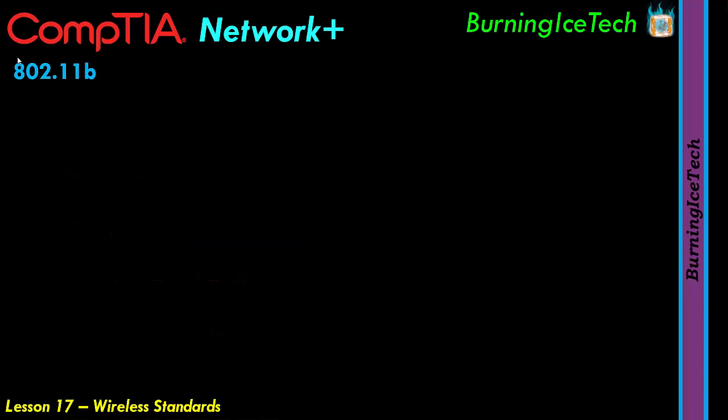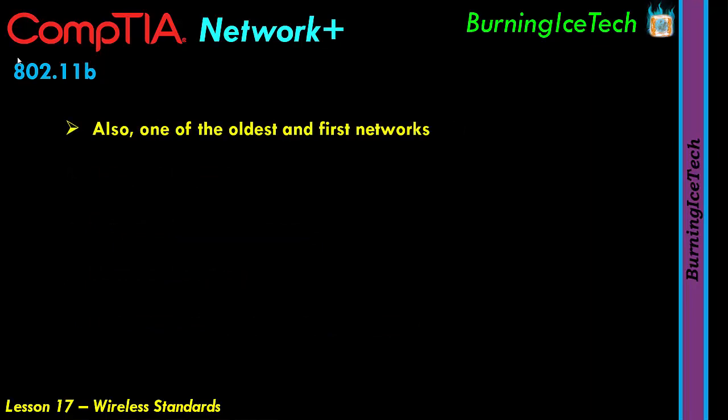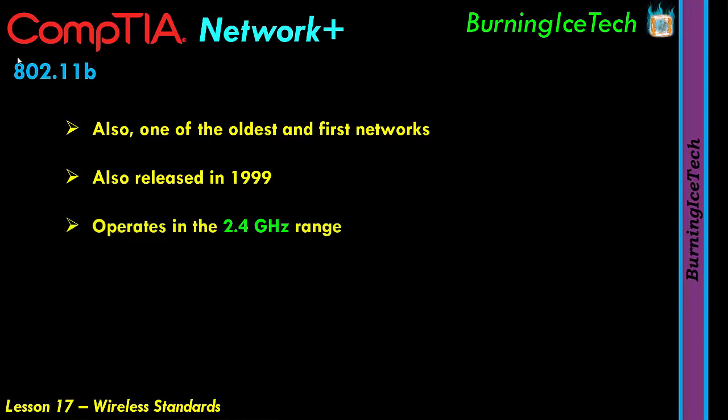Next up, we've got the 802.11b standard. This is also one of the oldest and one of the first IEEE standards, also released in 1999, like the 802.11a. Unlike the 802.11a which operates at 5 gigahertz, the 802.11b standard operates at the 2.4 gigahertz frequency range.